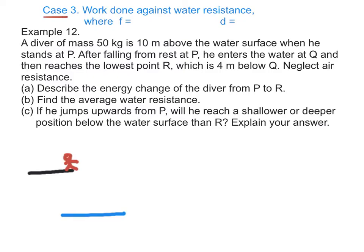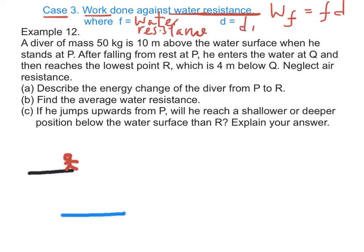Case 3: the work done against water resistance is equal to Fd, where F is the water resistance force and d is the distance traveled in water. Example 12: a diver of mass 50 kg is 10 meters above the water when he stands at P.